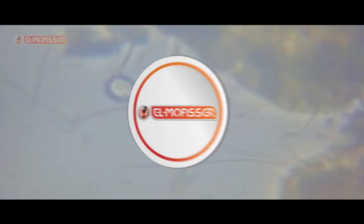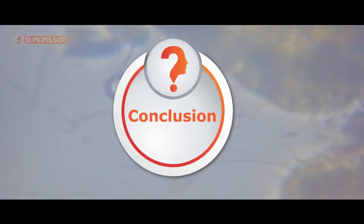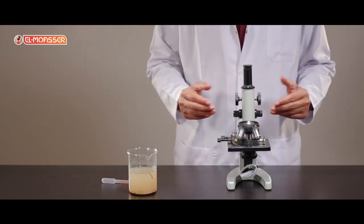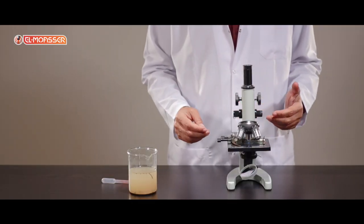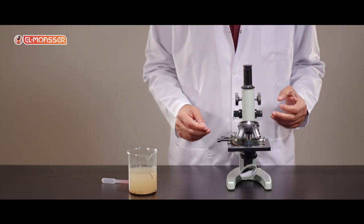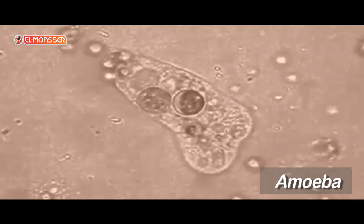that move by flagella. Conclusion: the basis used in classifying protists is the type of locomotion, such as amoeba which depends on pseudopodia for locomotion.